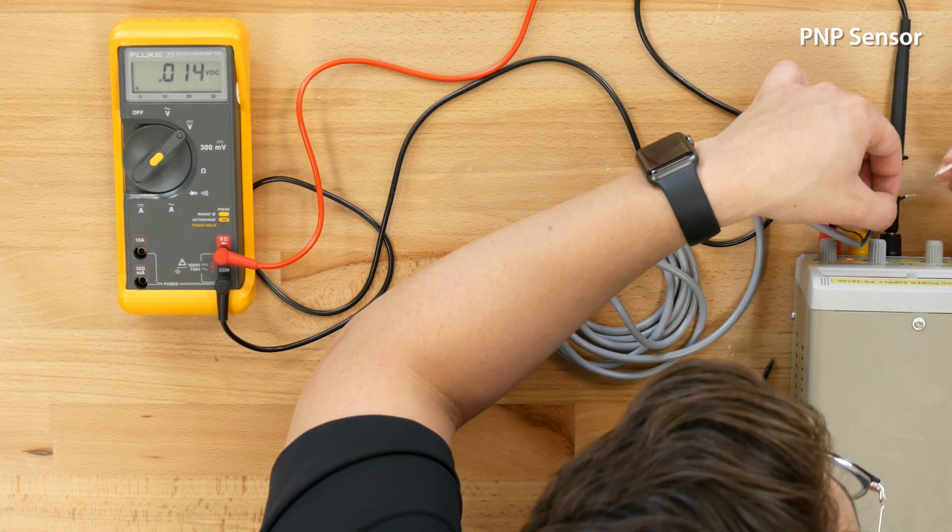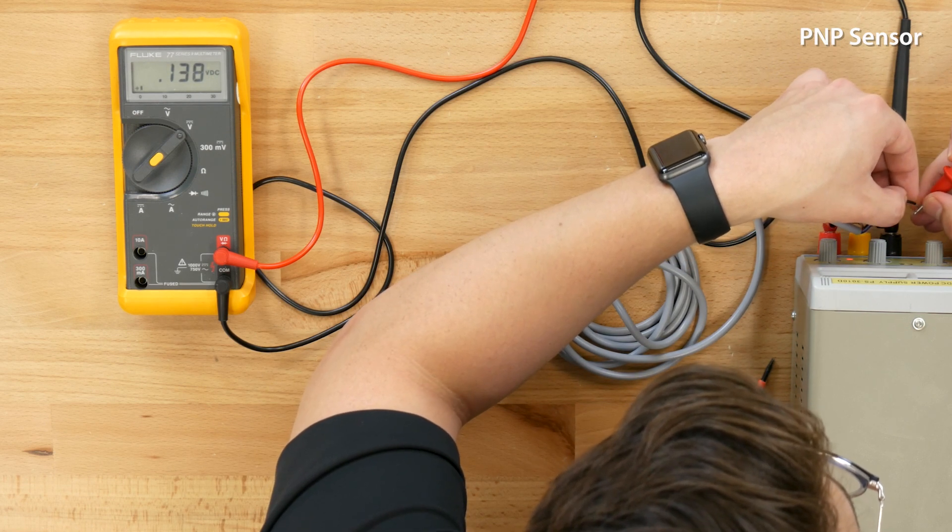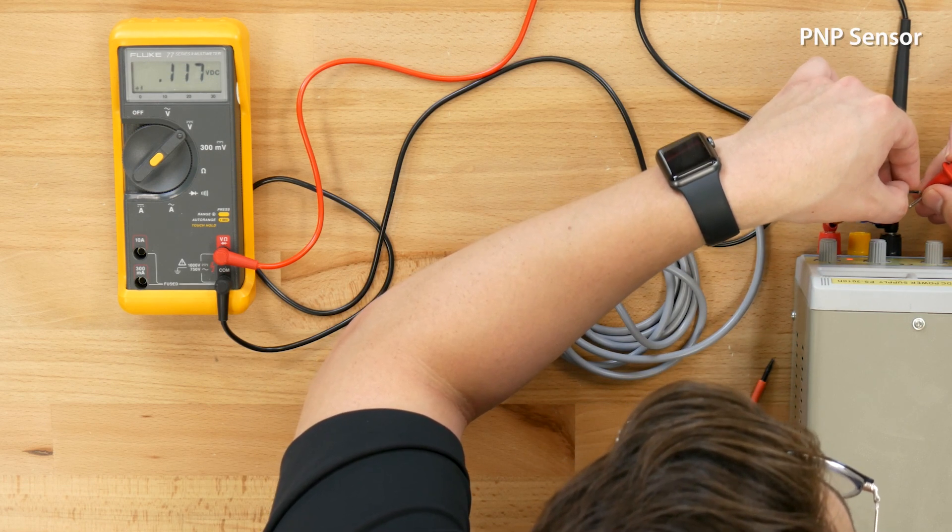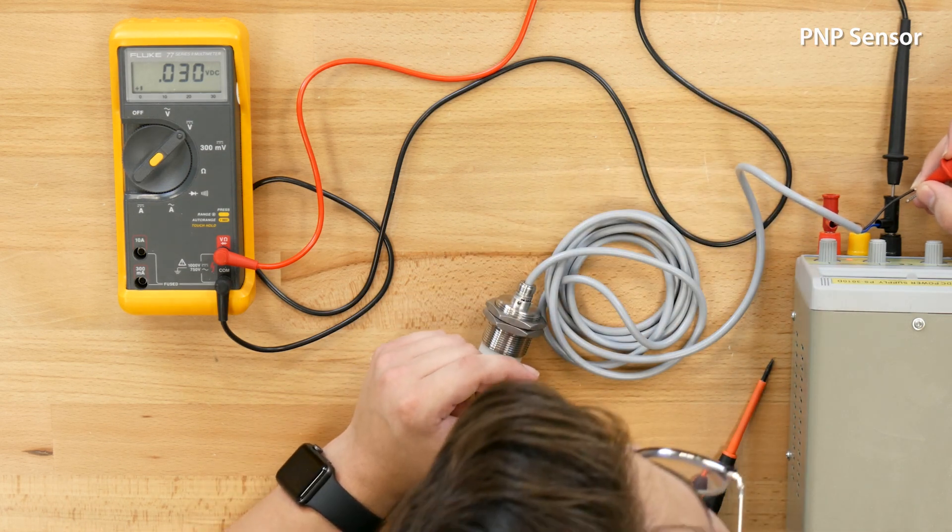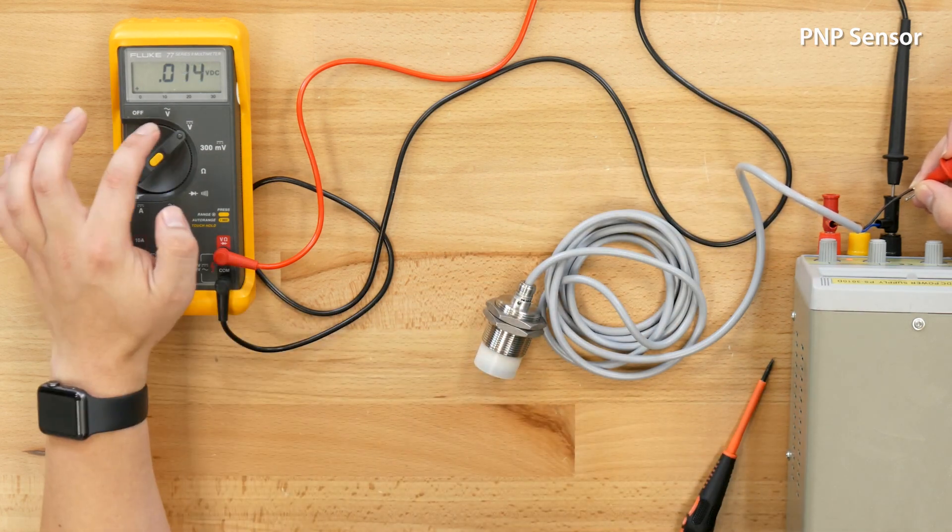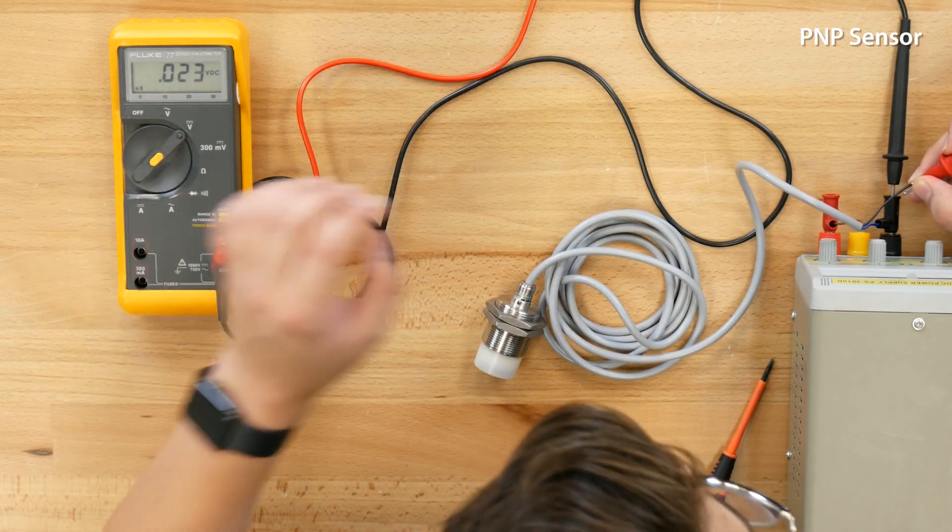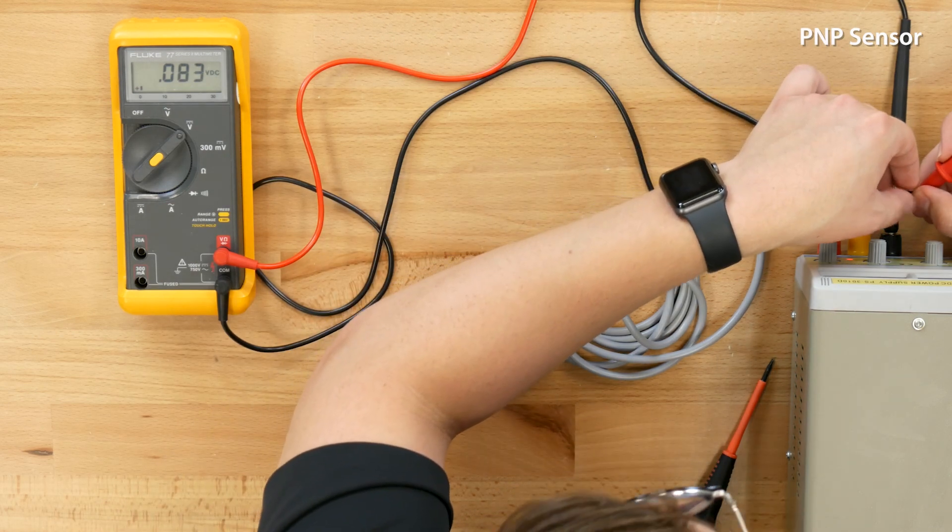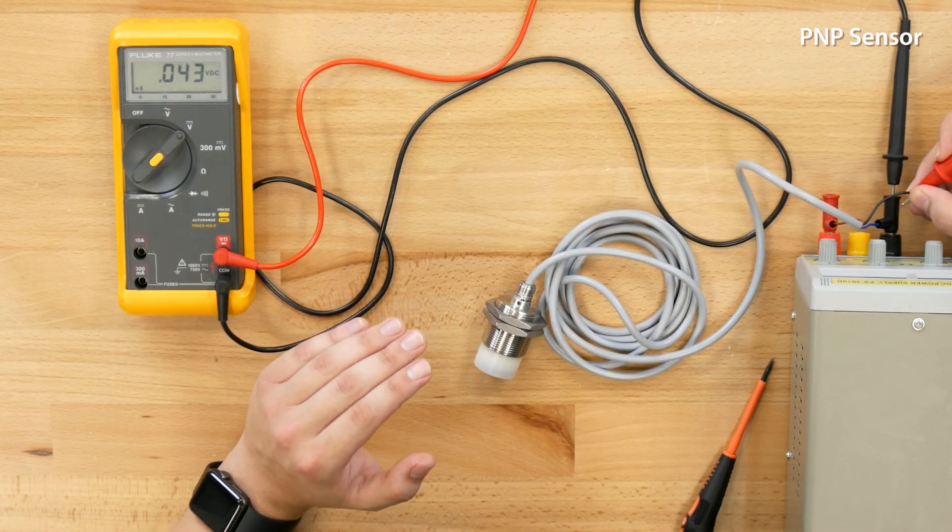And we will connect our positive probe to our output signal and we can see that we're measuring around zero volts difference between our common and our output. This is again what you would expect for a PNP sensor.